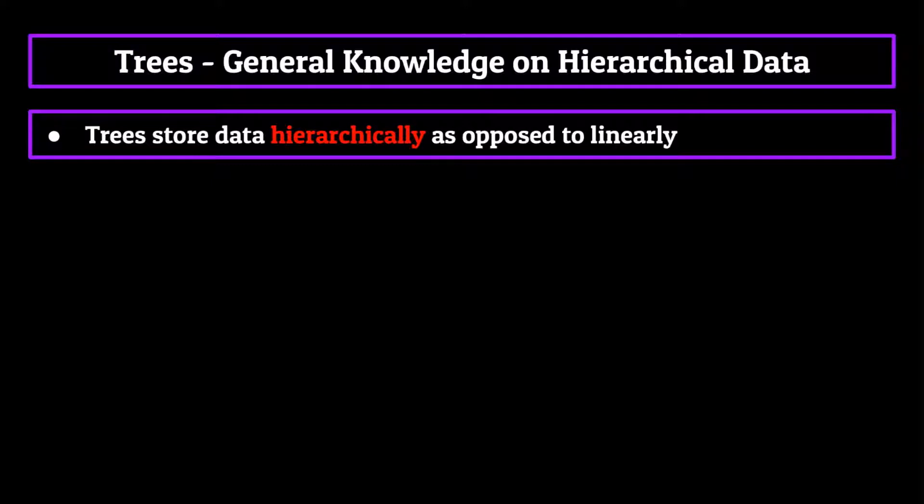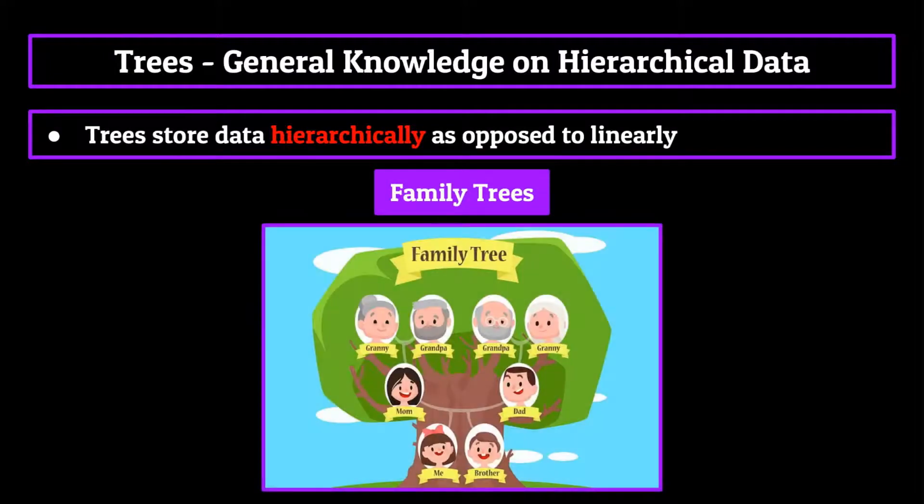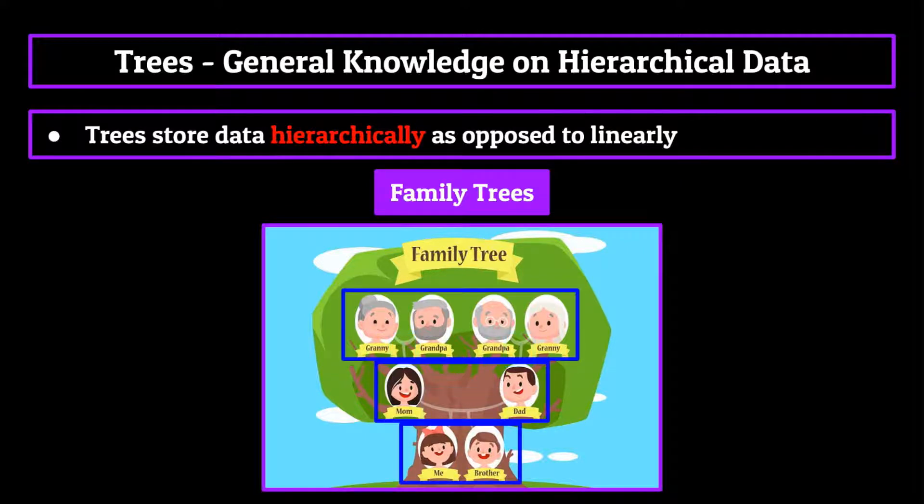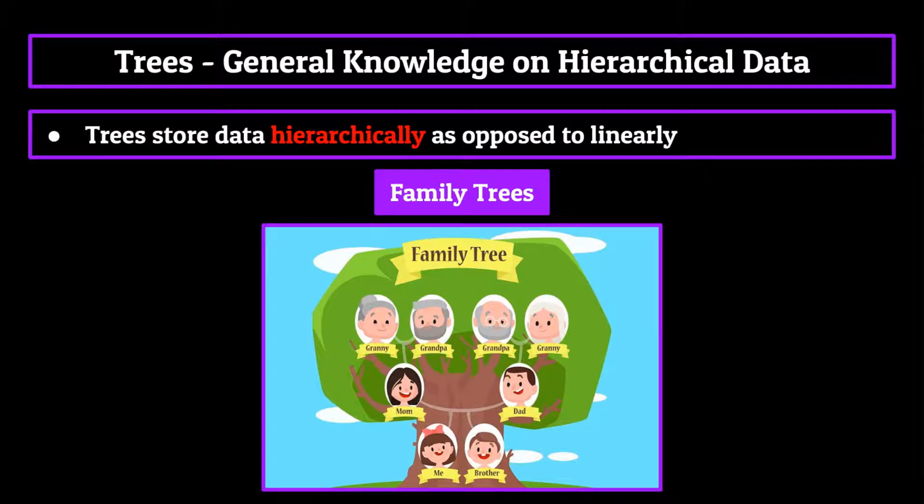The most common real world example of hierarchical data would be a family tree. Each person would be an element in the family tree and connections wouldn't be based on a simple linear fashion. Rather, connections would be more abstract and could lead to multiple paths or branches. Each generation is ordered on a hierarchy, which is where the name comes from. And as you can see, there's no definitive end to the family tree. This is hierarchical data in the flesh.